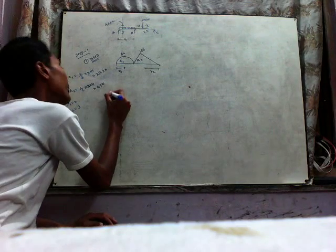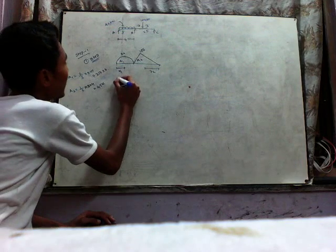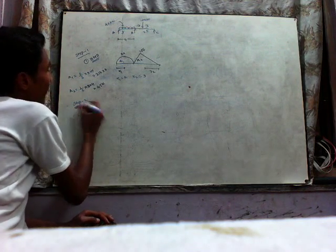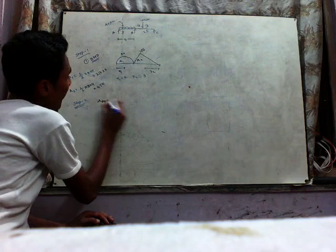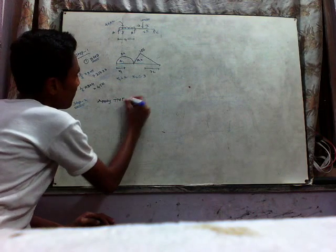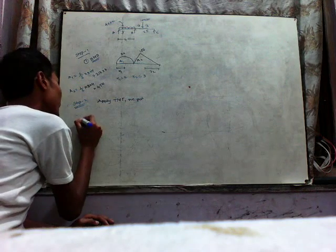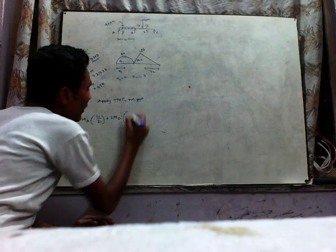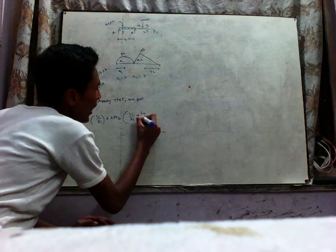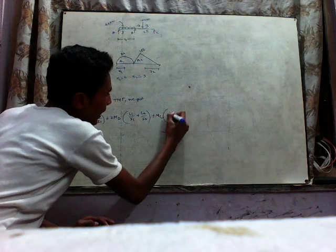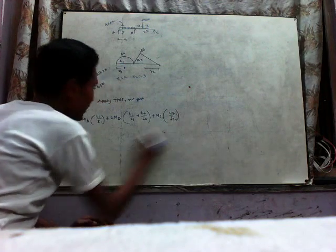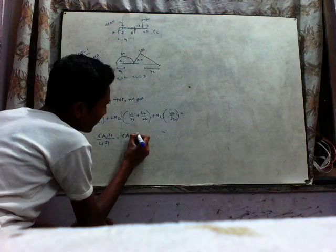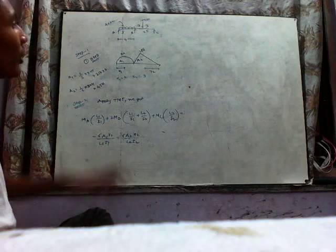Now we wanted to apply the TMT theorem for this equation. This is the second step. X1 equals to 2 and X2 equals to 3. Step number 2 apply TMT. The TMT: 2Mb(L1/I1 + L2/I2) is equal to minus 6A1X1/(L1I1) minus 6A2X2/(L2I2).